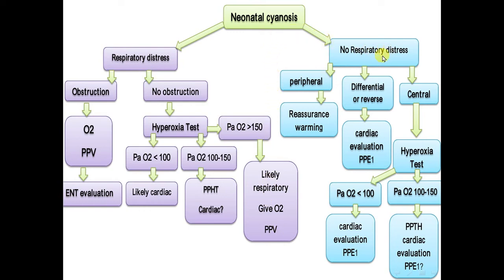If there is no respiratory distress: if it is peripheral cyanosis, reassure and rewarm. If it is differential or reverse differential, this requires cardiac evaluation — the patient needs evaluation and prostaglandin E1 infusion. If it is central cyanosis, also perform the hyperoxia test. If PaO2 is less than 100, this is most likely cardiac and the patient needs prostaglandin. If equivocal between 100 and 150, this may be persistent pulmonary hypertension; the patient may need cardiac evaluation or prostaglandin infusion.